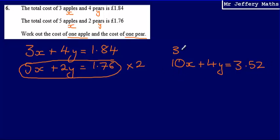So now we've got, let's just rewrite this one at the top, 3x plus 4y is equal to £1.84. So now what we've got is we've got two equations, two simultaneous equations where we've got matching unknowns. So we've got 4y and 4y.